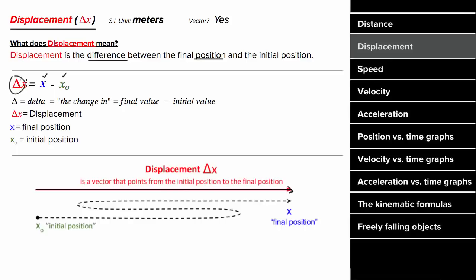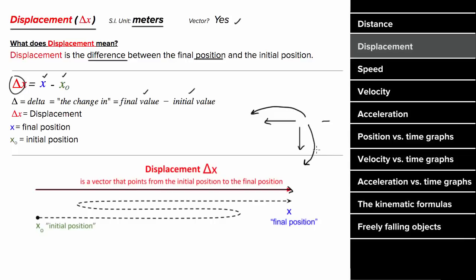This delta represents the change in, which means final minus initial. The SI units for displacement are meters. It's a vector, which means if the displacement is leftward or downward, the displacement can be negative. If you end up further left from where you started, your horizontal displacement is negative. And if you end up further down from where you started, your vertical displacement is negative.